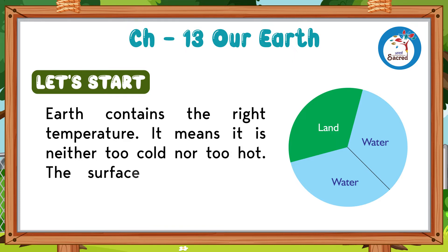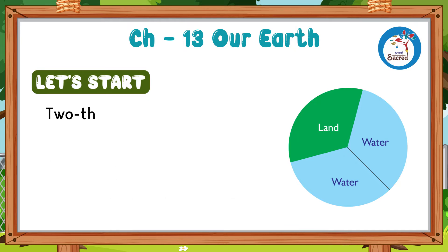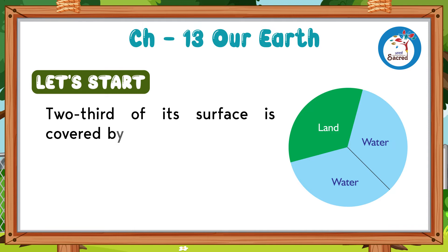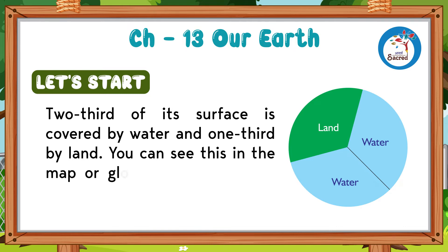The surface of the Earth consists of water and land. Two-thirds of its surface is covered by water and one-third by land. You can see this in the map or globe.